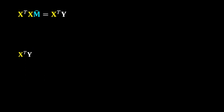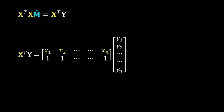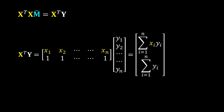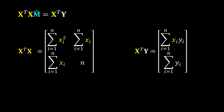Now calculate X^T y. Take the transpose of the X matrix and multiply it with the vector y. We get a vector with summation of xi·yi and summation of yi. We have now calculated X^T X and X^T y.